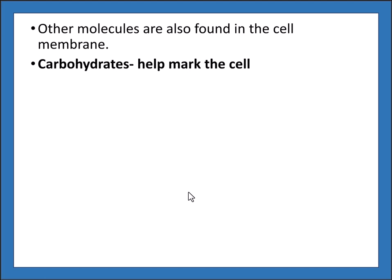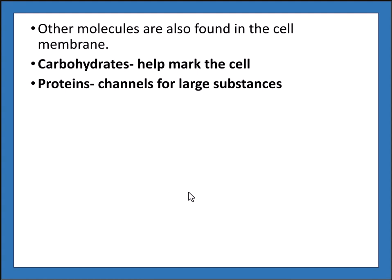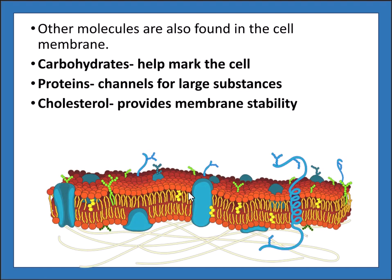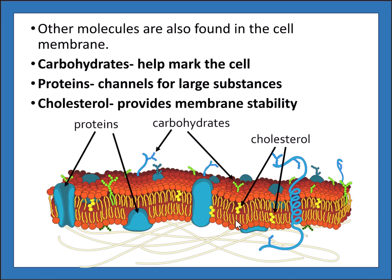Other molecules are also found in the cell membrane. Carbohydrates help to mark the cell and provide support. Proteins are channels for large substances to cross the cell membrane. Cholesterol, which is another fat, helps to provide membrane stability. In the bilayer picture, we can see channel proteins, embedded proteins, carbohydrates, and cholesterol embedded with the phospholipids.